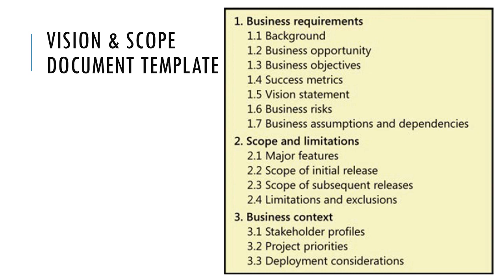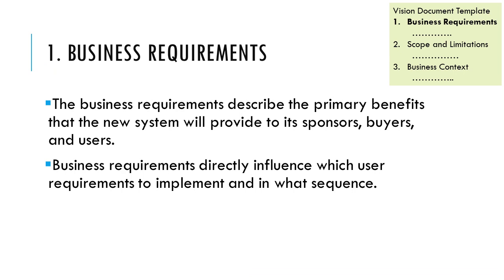I have divided the description into two parts because there are three sections. Section 1 is Business Requirements, Section 2 is Scope and Limitations, and the last section is Business Context. I will cover sections through 1.7 in this first lecture, and upload Part 2 in the next lecture so there are not too many slides in one session.